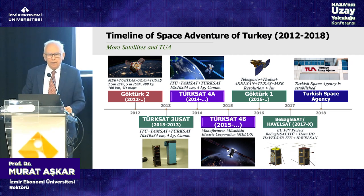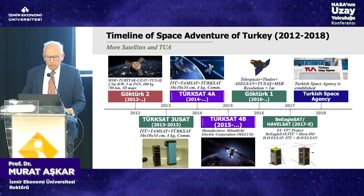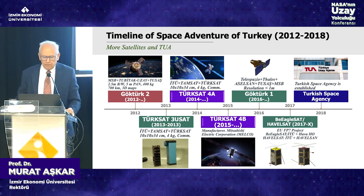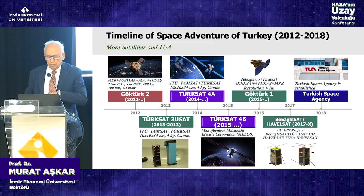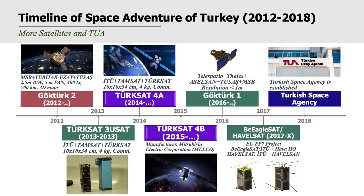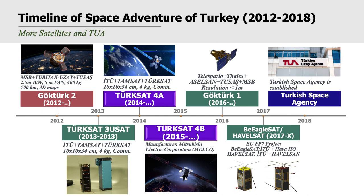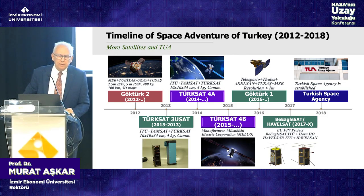TürkSat then initiated internal projects, building TürkSat 3U satellites. TürkSat 4A and 4B were sent to space, with the manufacturing company shifting from France to Japan — Mitsubishi built these satellites. Another Earth observation satellite, Göktürk 1, was also sent. Havelsan and Istanbul Technical University built two satellites with European Union support. In 2018, the Turkish Space Agency was established.